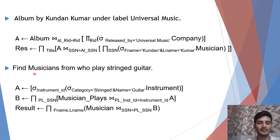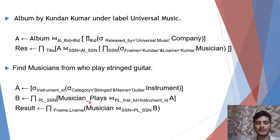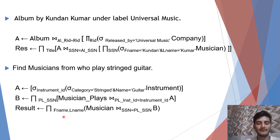The next query is: find the musician who plays stringed guitar. In A, we store all instrument IDs where the category of instrument is string and name of instrument is guitar. In B, we join the musician_plays and A table where pl_instrument_id is equal to instrument_id and project plssn, stored in B. Then musician and B are joined wherever ssn is equal to plssn, and first name and last name are projected, stored in result.